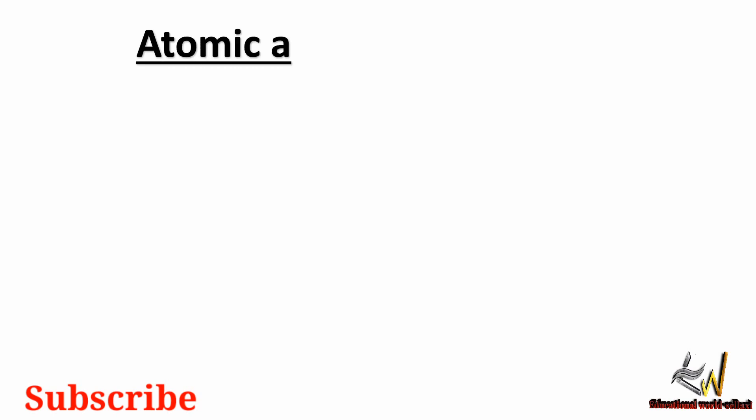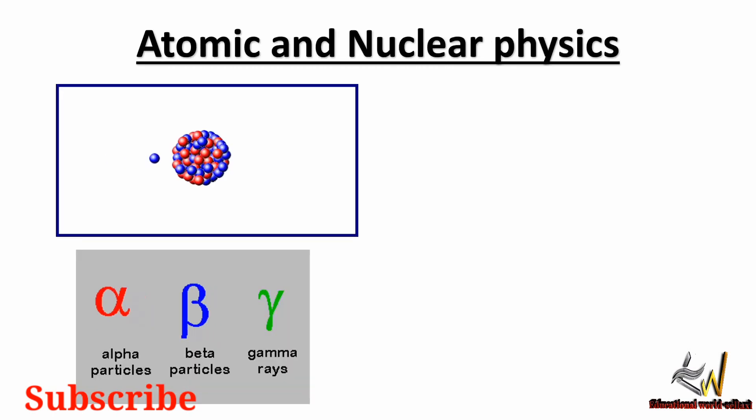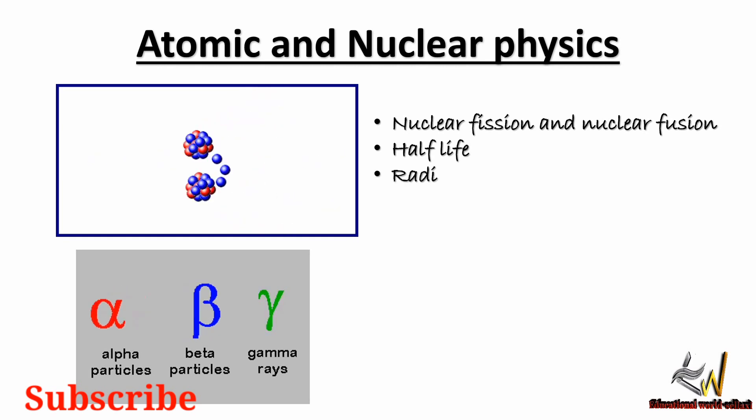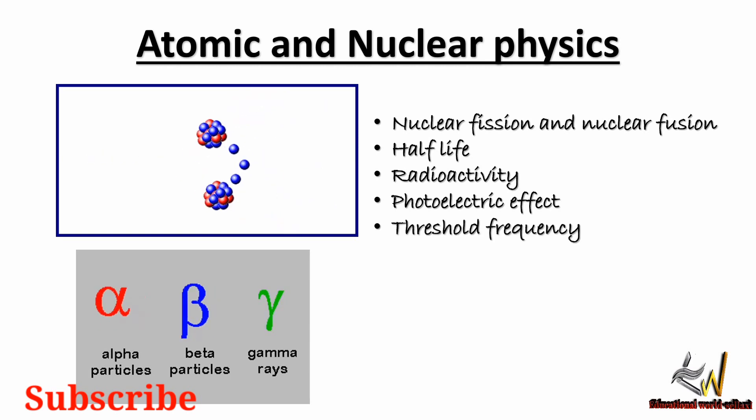The next area is atomic and nuclear physics. We will be looking into areas like nuclear fission and nuclear fusion, half-life of a radioactive element, radioactivity, photoelectric effect, threshold frequency, work function of a meter, and so much more. If you can attack any question in these subsections, you'll be able to make an A in your WAEC physics.